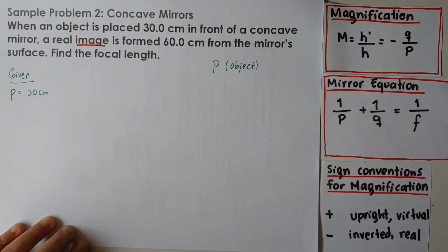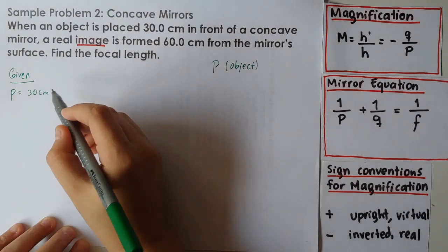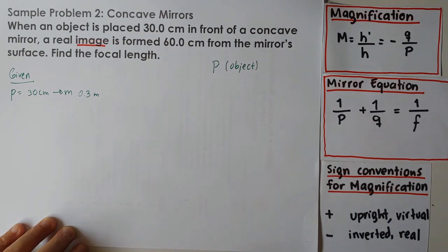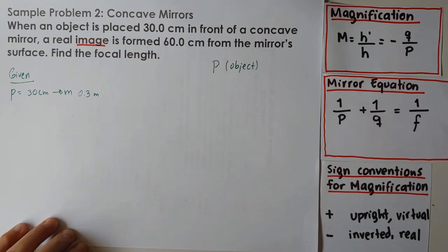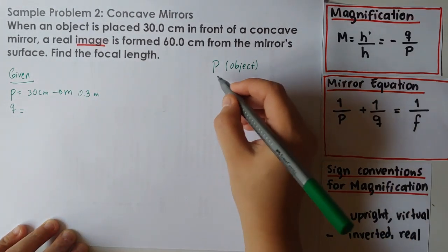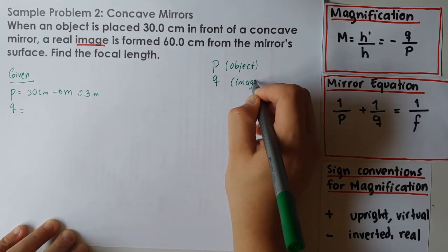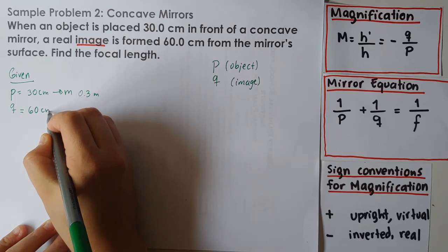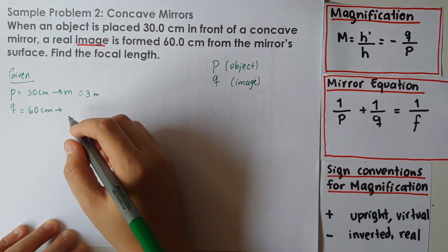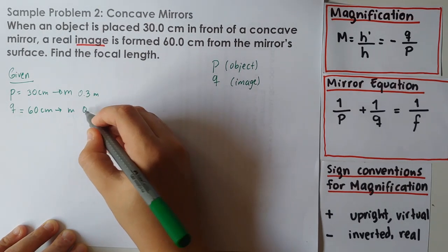As I always suggest, convert centimeters to meters, so P is 0.3 meters. The real image is formed 60 centimeters from the mirror surface. So Q — the image distance — is 60 centimeters, which converts to 0.6 meters.